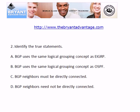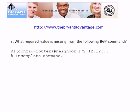Moving on to question 2 — take a look at these four statements and tell me which ones are true. Question 3: assuming that I am just beginning an adjacency or trying to make an adjacency form between two routers, I put this neighbor command in and got the dreaded 'incomplete command' message. What required parameter is missing from this command?